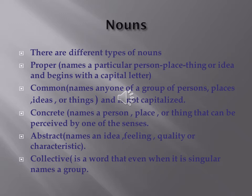A concrete noun names a person, a place, or a thing that can be perceived by one of the senses. An abstract noun names an idea, feeling, quality, or characteristic. A collective noun is a word that, even when it is singular, names a group.